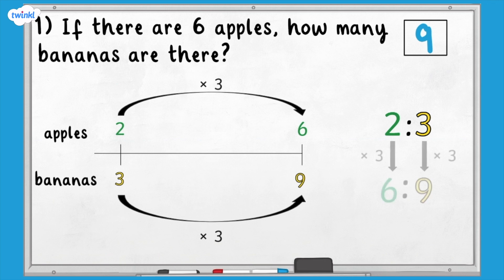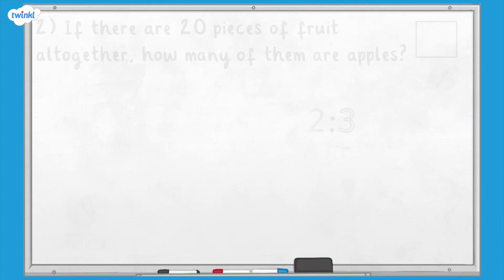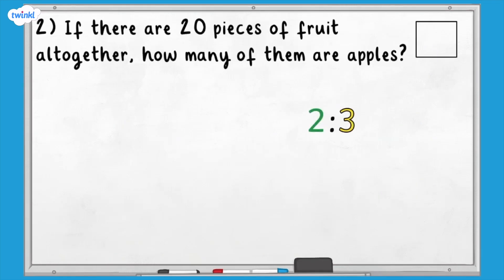This is how it would look without using the number line. Question two: if there are 20 pieces of fruit all together, how many of them are apples? Let's use counters to help us solve this problem. The green counters are representing apples and the yellow counters are representing bananas.